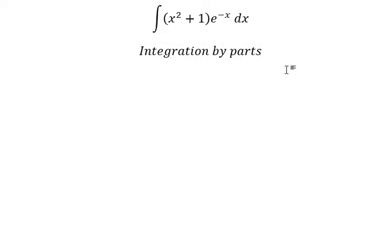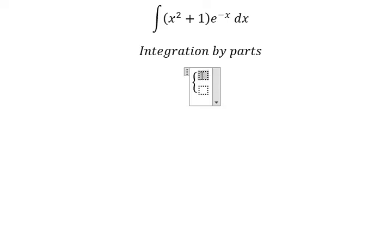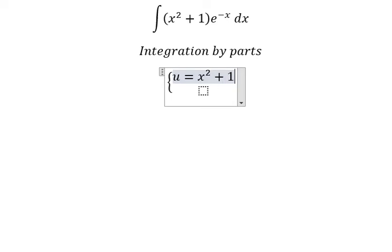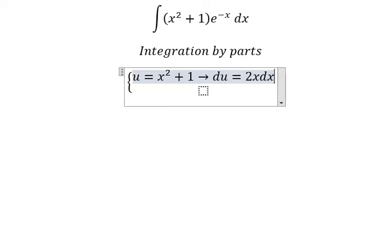So I will put u equals x squared plus 1. Then we take the first derivative of both sides: du equals 2x dx. The first derivative of x gives us 2x.